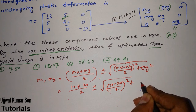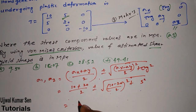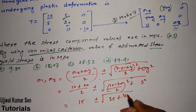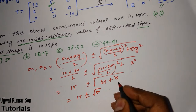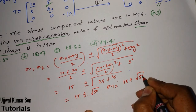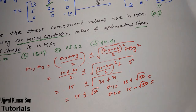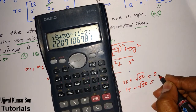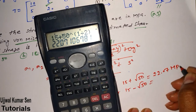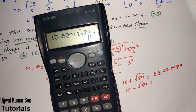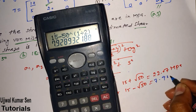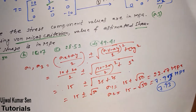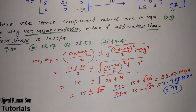That gives 15 ± √[(100/4) + 25] = 15 ± √50. So sigma_1 = 15 + √50 = 22.07 MPa and sigma_2 = 15 − √50 = 7.93 MPa. We now have sigma_1 and sigma_2 — but that's just the beginning. We have solved the simple part; now we need to find the yield shear stress.